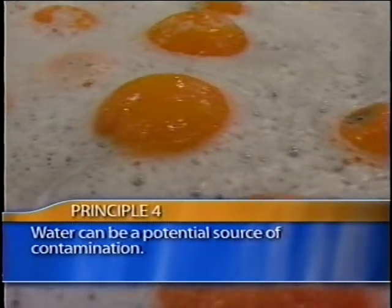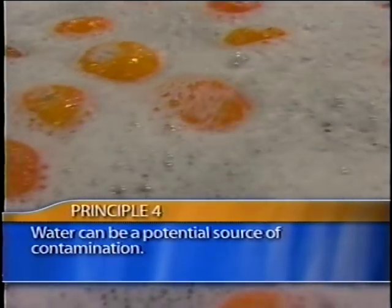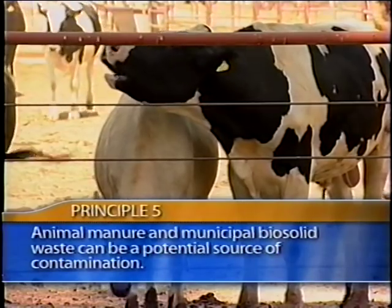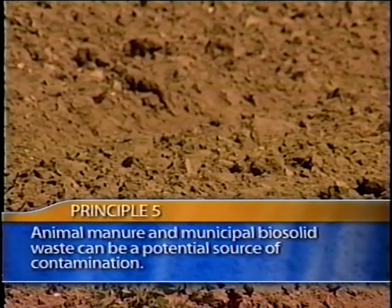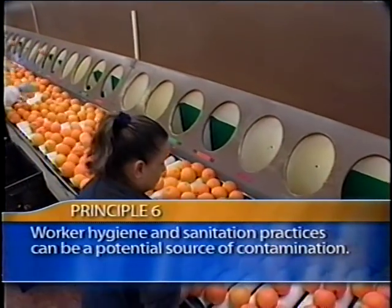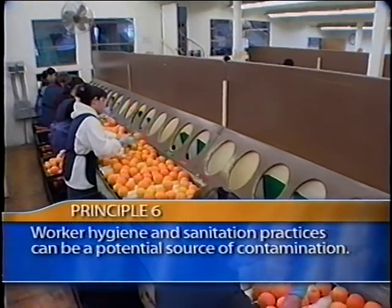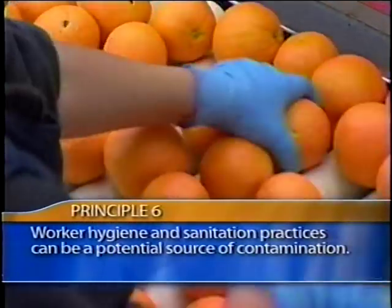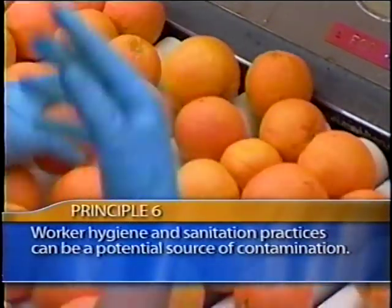Principle Four: whenever water comes in contact with produce, its source and quality dictates the potential for contamination. Minimize the potential of microbial contamination from water used with fresh fruits and vegetables. Principle Five: practices using animal manure or municipal biosolid wastes should be managed closely to minimize the potential for microbial contamination of fresh produce. Principle Six: worker hygiene and sanitation practices during production, harvesting, sorting, packing, and transport play a critical role in minimizing the potential for microbial contamination of fresh produce.